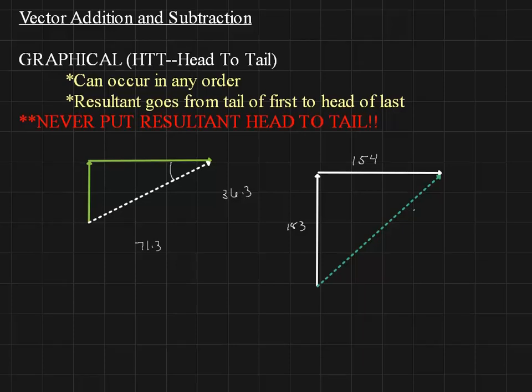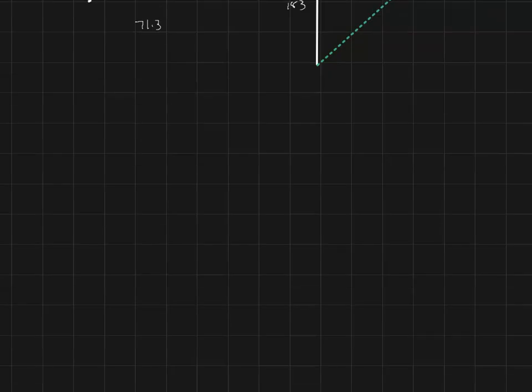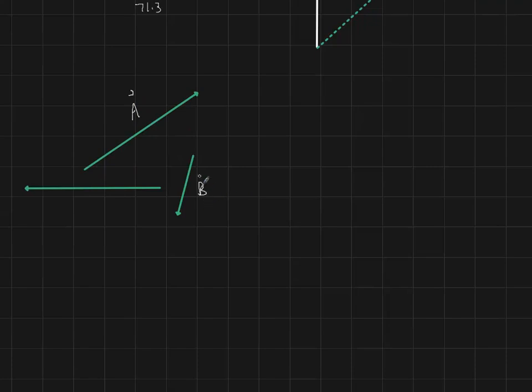Now, suppose we have a different situation. We have three vectors and let me draw those very quickly. I'm just going to draw three random vectors. And so we have vector A points like this, vector B points like this, and vector C maybe just points straight across. And I'm even going to label these. So we have vector A, vector B, and vector C. Take a moment right now and add these three vectors head to tail.